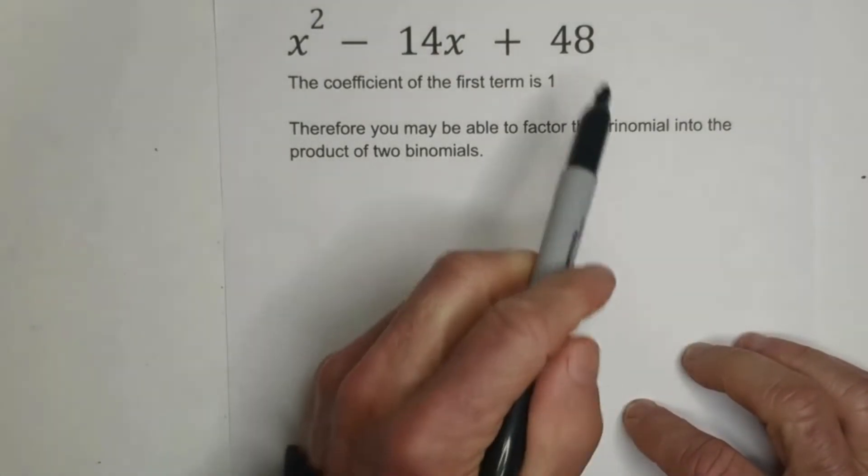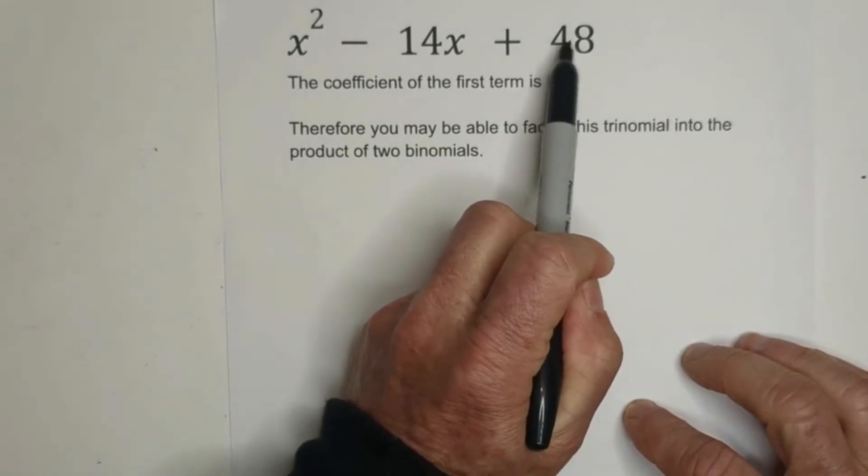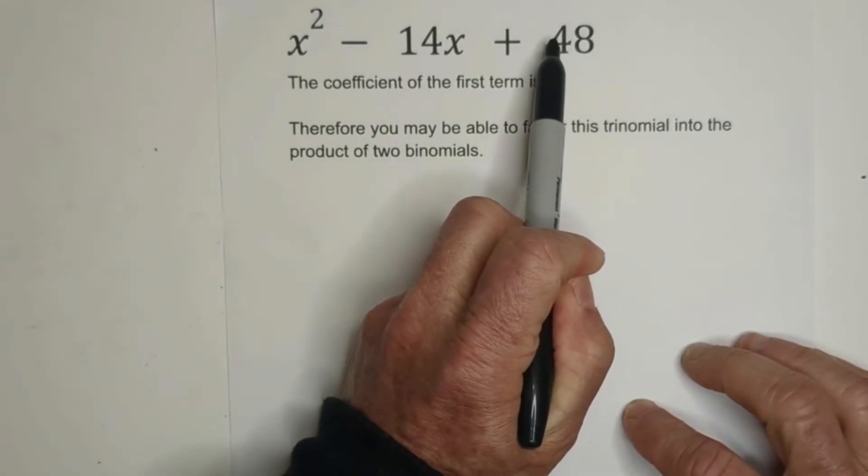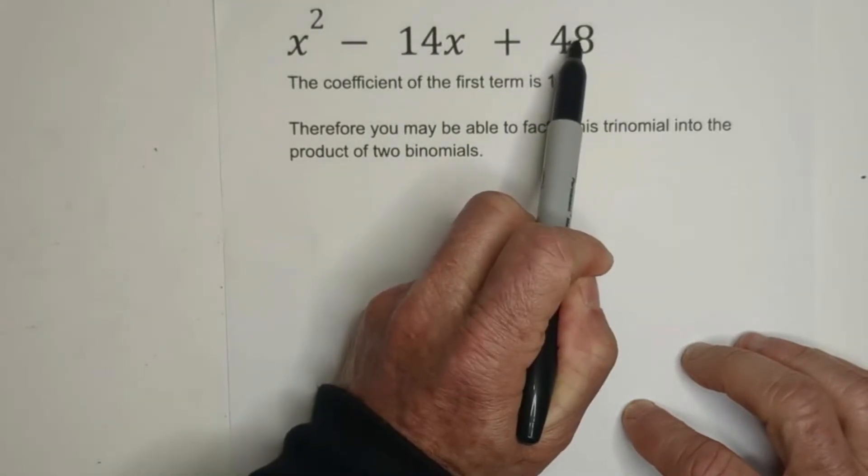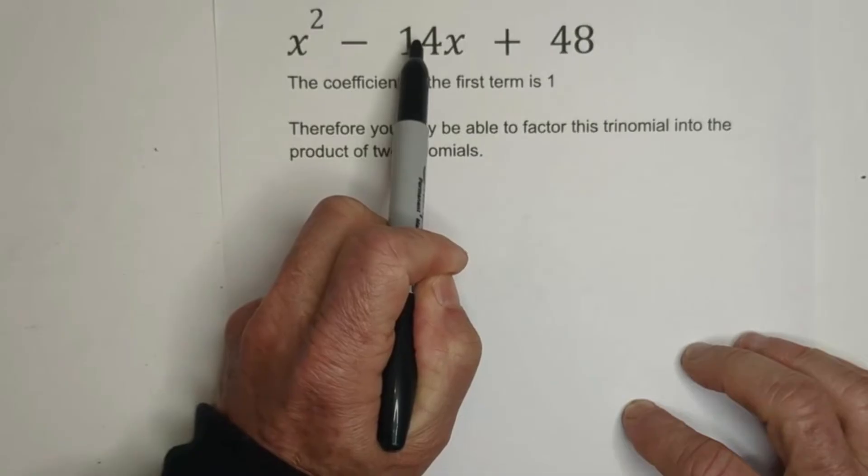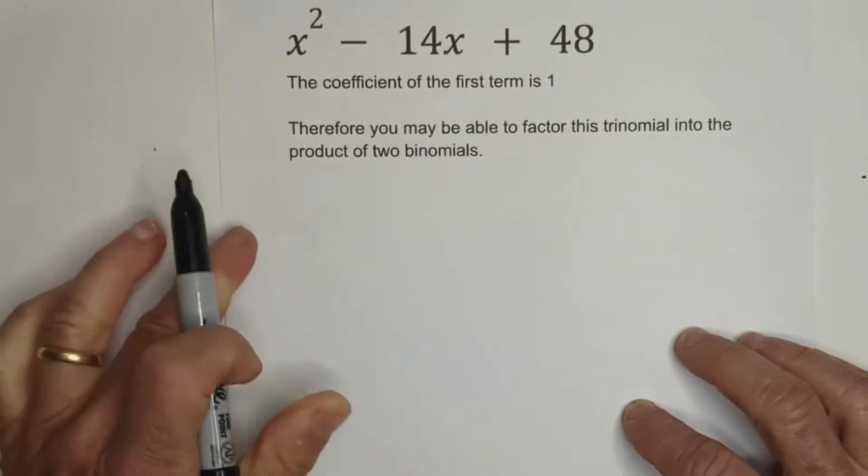So what you do is you need to take the factors of 48. When they are added together, they should equal this middle term. So the factors of the last term need to, when added together, equal the middle term.